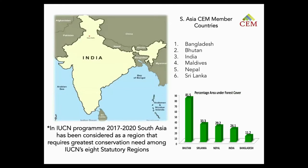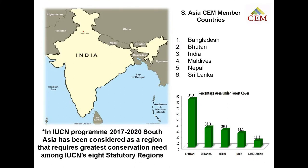Coming to a brief overview on South Asia — I'm sure all participants are well aware of the geographical location and all the countries that are part of South Asia. The South Asia Commission on Ecosystem membership covers countries mostly from Bangladesh, Bhutan, India, Maldives, Nepal, and Sri Lanka, whereas Pakistan, Afghanistan, and China are part of other IUCN regions.